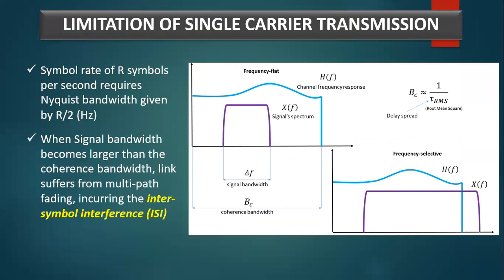Coming to the limitations of single carrier transmission: in order to support a high data rate, the minimum required bandwidth is the Nyquist bandwidth, which is directly proportional to the symbol rate. This implies that a wider bandwidth is required to support a higher data rate in single carrier transmission. When the signal bandwidth becomes larger than the coherence bandwidth in a wireless channel, the link suffers from multipath fading, incurring inter-symbol interference.